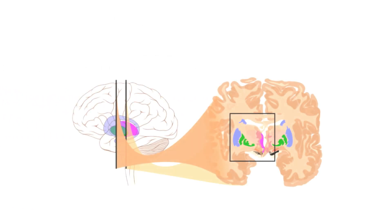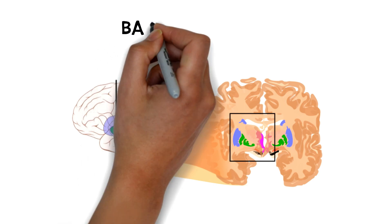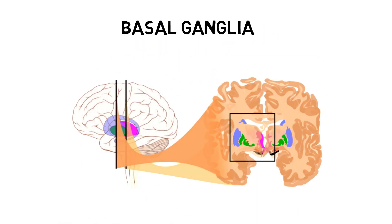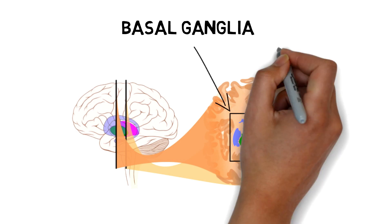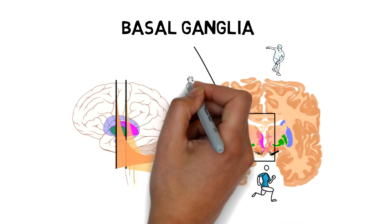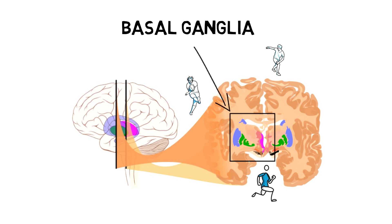Now, if we look right below the corpus callosum, we find this area called the basal ganglia. This collection of nuclei — which are collections of cells with the same functions — are called the basal ganglia. The main function of the basal ganglia is to coordinate all of our movements, and if this area stops working, people will unfortunately end up with Parkinson's disease.